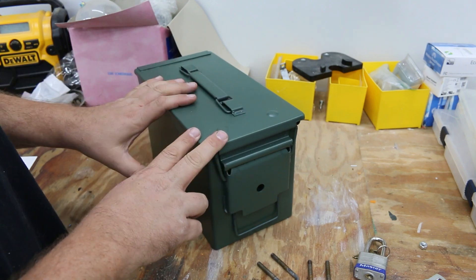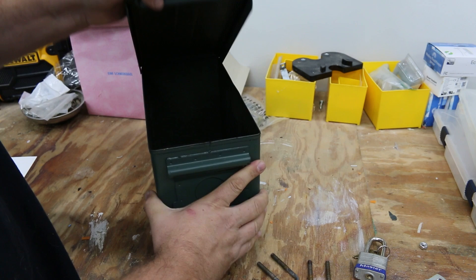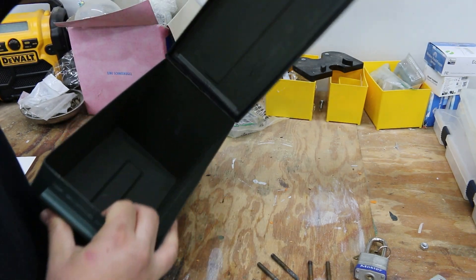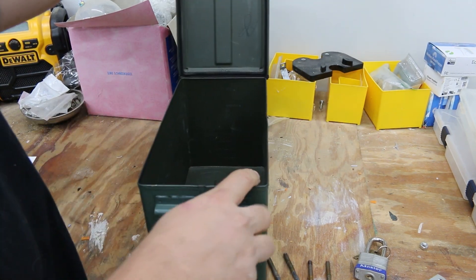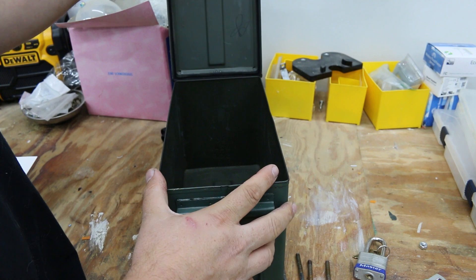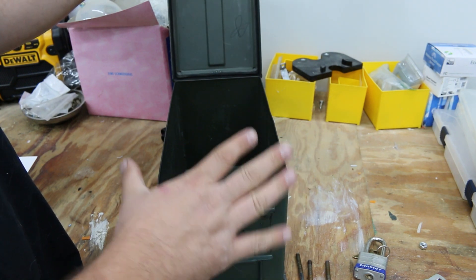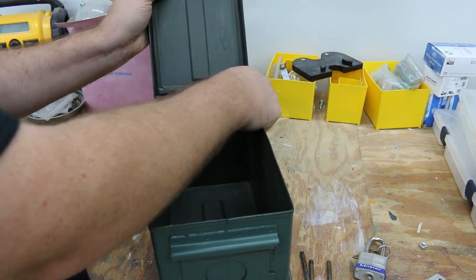But ammo cans are nice. They have a seal on them for anyone who doesn't have one, doesn't realize. There's generally a rubber seal. So you can put desiccant in it to keep things dry. It's really nice storage, nice metal storage. The lid comes off as well. One direction.